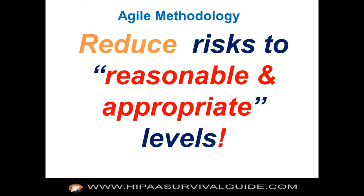You want to reduce risk to levels that are reasonable and appropriate. Reasonable and appropriate is weasel language on the behalf of HHS — it doesn't have a concrete meaning. It's an objective standard similar to the reasonable person standard in law. Who is a reasonable person? They don't exist. It's a hypothetical of what is reasonable. It's a subjective analysis you have to go through when you're applying risks to controls and analyzing the effect — does that reduce it to levels that are reasonable and appropriate, or could we do more?